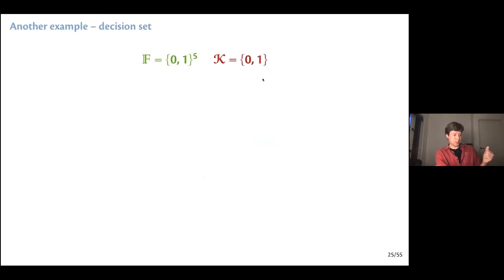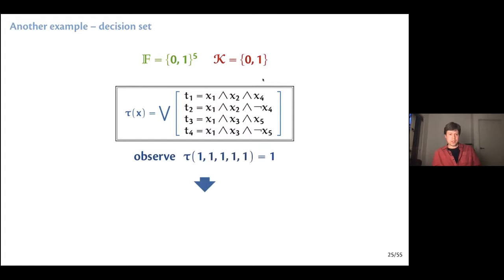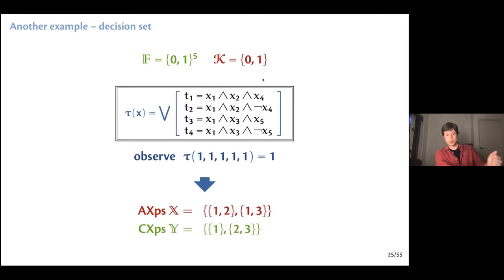Here's another example in the Boolean domain with five features, two classes, and a decision set represented as a DNF with four terms. The instance is all-ones and the prediction is 1. As long as X1 and X2 are true, either T1 or T2 evaluates to 1, guaranteeing prediction 1 — so {x1, x2} is an AXP. Similarly, {x1, x3} alone is sufficient to force prediction 1. For contrastive explanations: if we allow X1 to be false, the prediction will change.